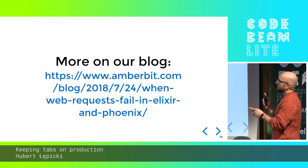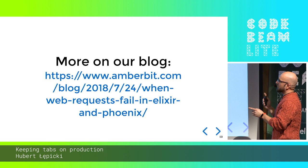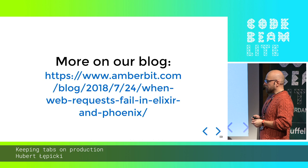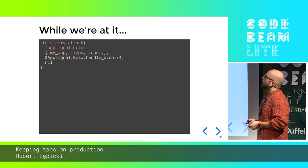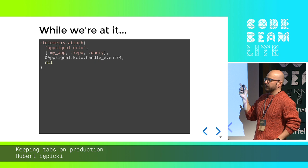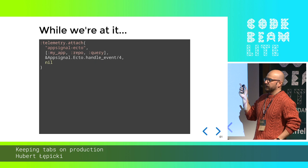There's a blog post on amberbit.com about catching instances when web requests fail and how to respond to those — you can use it as a basis to implement a very robust exception tracker for your Phoenix app. When installing AppSignal-Elixir, it will ask you to add some lines to your supervision tree to be executed whenever the application starts.